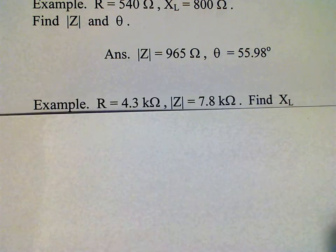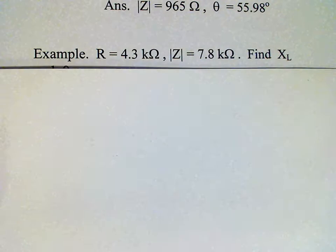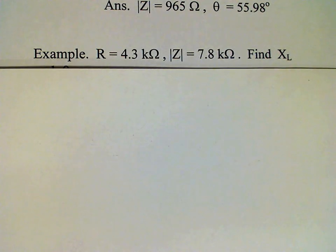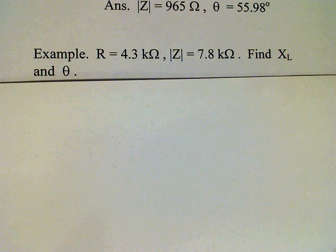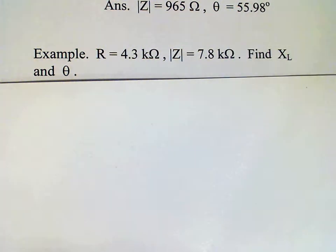Okay, let's do one more example. Now we're given R is 4.3 kilo ohms and the magnitude of the impedance is 7.8 kilo ohms. So first we need to find XL and the phase angle.